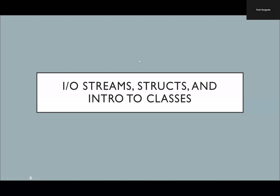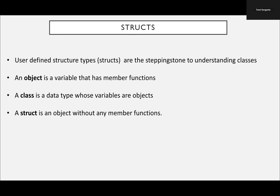I want to make sure that you have an understanding of how to use a struct, where it gets declared in the program, and how to use the dot operator. A struct is a stepping stone to understand classes. A struct does not have member functions. It's a way to store data, but different types of data as one. It's not really called an object, it's called an instance.